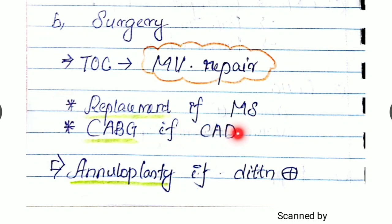If the patient is having coronary artery disease, we have to give coronary artery bypass grafting with internal mammary artery as the graft. It is an important MCQ, reminding you that. And if there is any dilation of the annulus, we have to do annuloplasty.